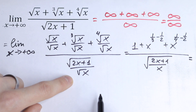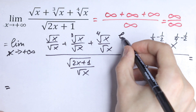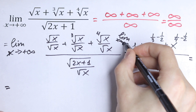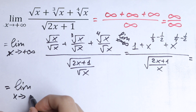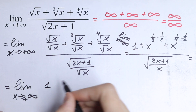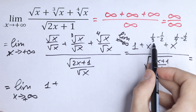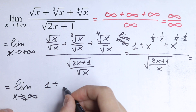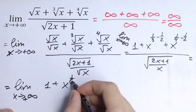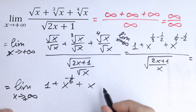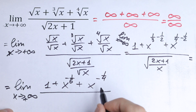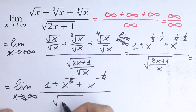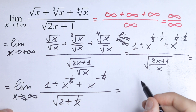Let's simplify this further. Limit as x approaches plus infinity. In the numerator we have one plus — computing one-third minus one-half gives minus one-sixth — so x to the power minus one-sixth. Plus x to the power one-fourth minus one-half, which gives minus one-fourth. And in the denominator we can write this as square root of two plus one over x.